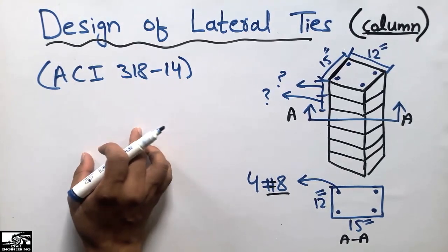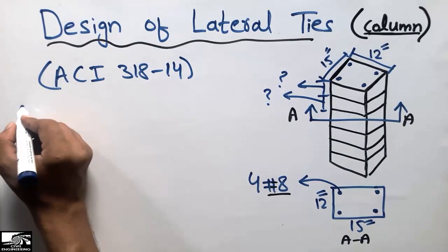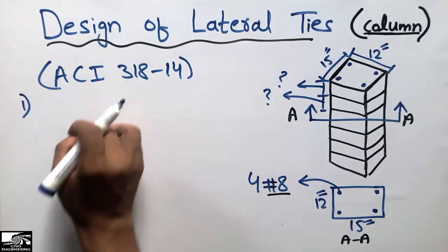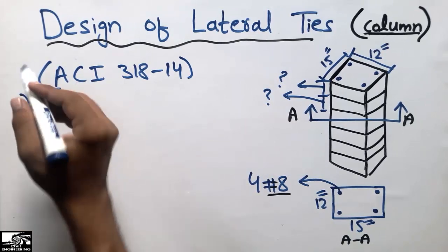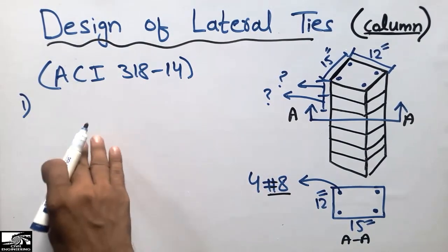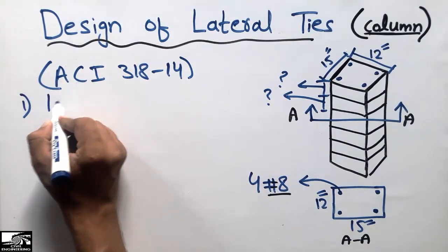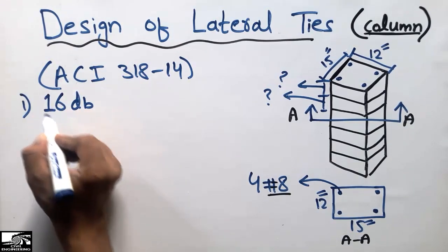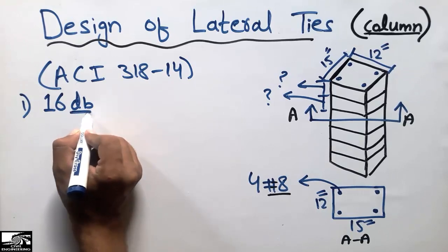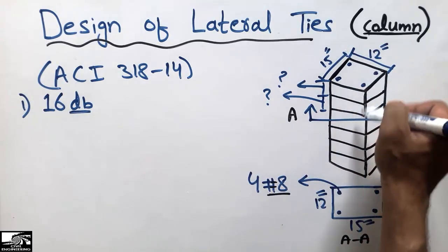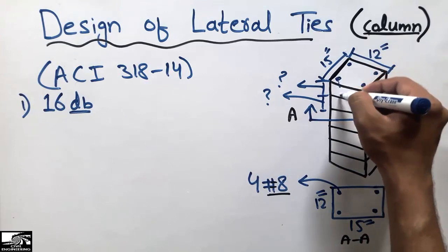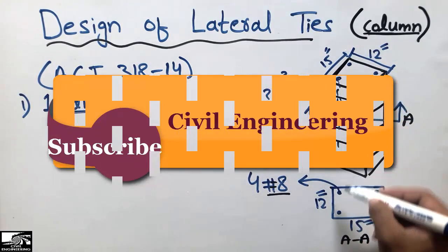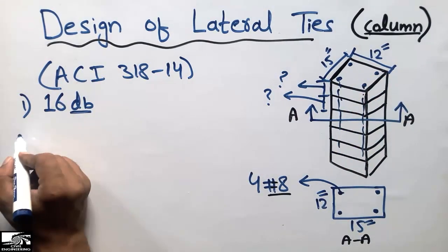You should choose the minimum of the three formula results to design the lateral ties. The first formula is 16 times the diameter of the longitudinal bar (16 × db), where db is the diameter of the longitudinal bars — the main bars running throughout the depth of the column.